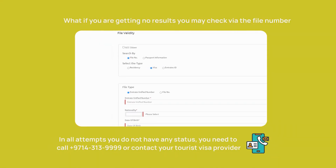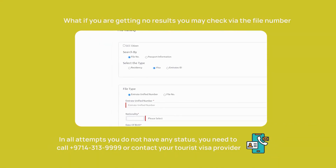If you are getting no results, you may check via the file number. If after all attempts you still do not have any status, you need to call +971 4 313 9999 or contact your tourist visa provider.